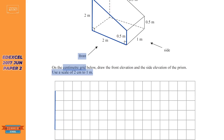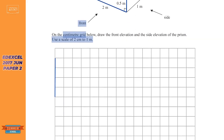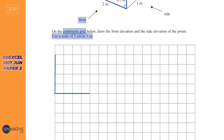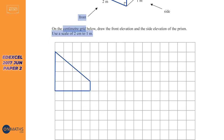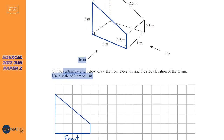So let's draw four squares up and four squares across. It says it's half a meter up, which will be one square — one centimeter is half a meter — and then we just join it up. Always do the horizontals and verticals and then leave the diagonal to the end. That is our front elevation.